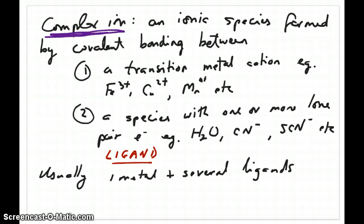What is a complex ion? It's basically an ionic species that's formed by covalent bonding between specifically two types of species. One would be a transition metal cation, so transition metal, remember, is in the middle part of the periodic table on the metal side—you can have iron, copper, manganese, nickel, cobalt. All of those could serve as the transition metal cation. And the second species that makes a bond with the transition metal is called a ligand.